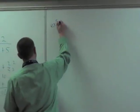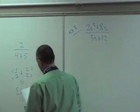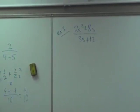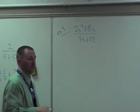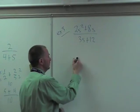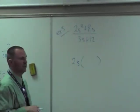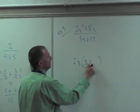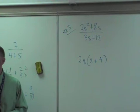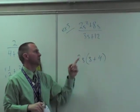Example 3: 2s squared plus 8s over 3s plus 12. Factor, factor, factor. What can I factor out of the top? What's common in both of those? 2 and s. Factor it out. So now 2s, what do you have left inside? S plus 4, because 2s times s is 2s squared, 2s times 4 is 8s. Factoring is just division. If you're not sure what goes inside the parentheses, divide it. 2s squared divided by 2s, give me s. 8s divided by 2s is 4.